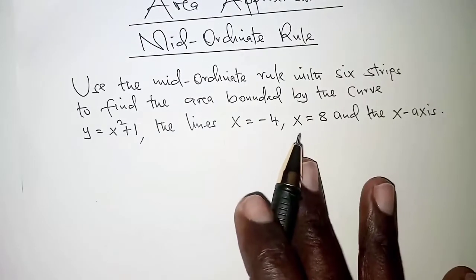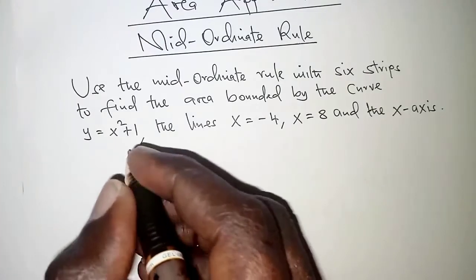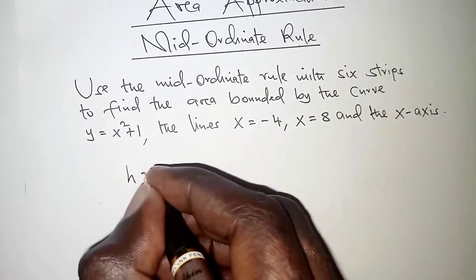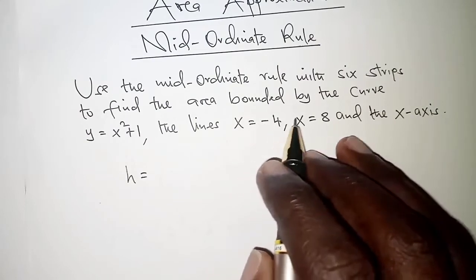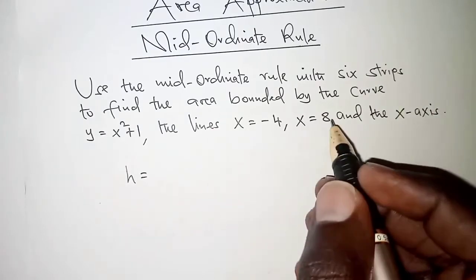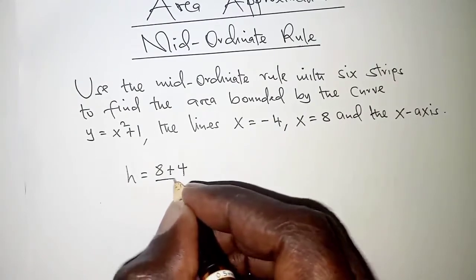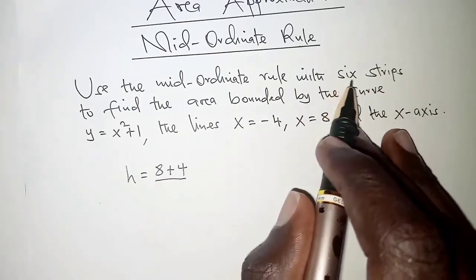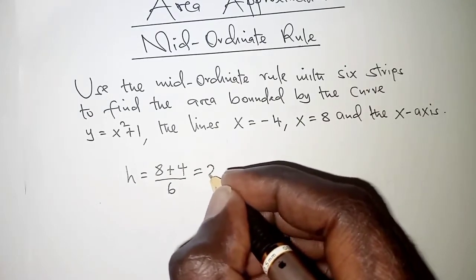In order to go about this question, the first thing we can do is a rough sketch. To do that, we first get the width of the strips. You obtain the width by taking the extreme values — we have x = negative 4 and x = 8 — so we take 8 minus negative 4, which gives 12, then divide by the number of strips, which is 6, and that simply gives us 2.